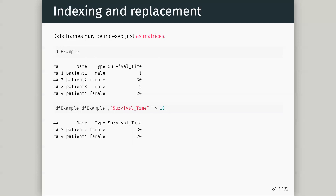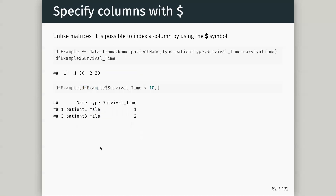Now we have our first data frame containing different types of data along our columns. Data frames can act just like matrices in terms of indexing. Even though I have mixed data I can still operate on numeric columns — remember in a matrix as soon as I added a character I could no longer do numeric operations. Here I can subset down to the survival column and find which values were above 10, then use that to index the rows.